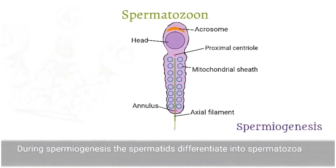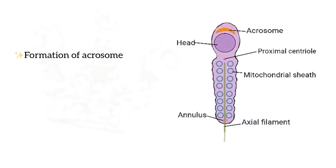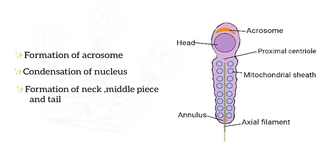So what are those changes? First, formation of the acrosome — the acrosome covers half of the nucleus and contains enzymes that assist penetration of the egg. Second, condensation of the nucleus. Third, formation of the neck, middle piece, and tail. And finally, the fourth change is the shedding of most of the cytoplasm as residual bodies, which are phagocytized by the Sertoli cells.